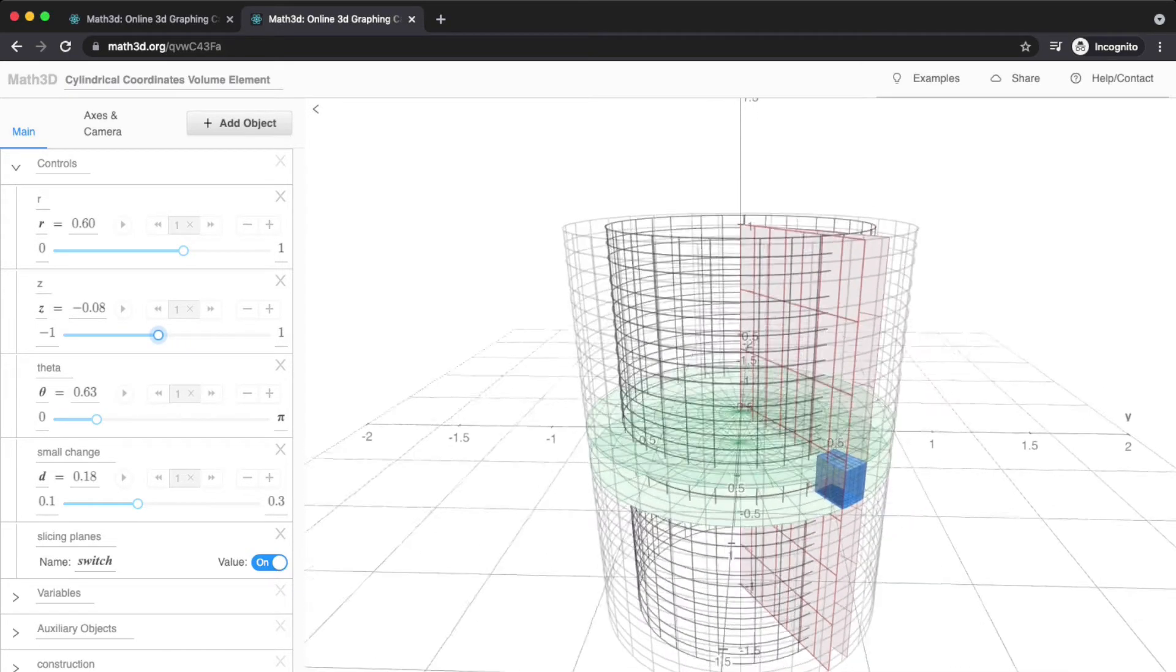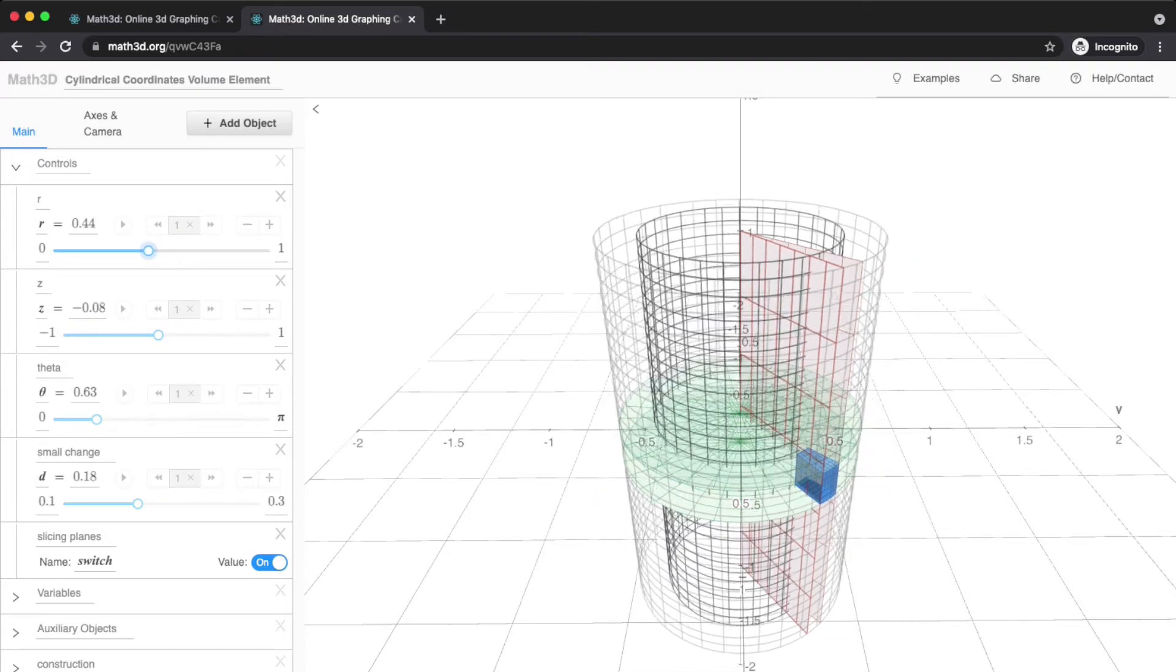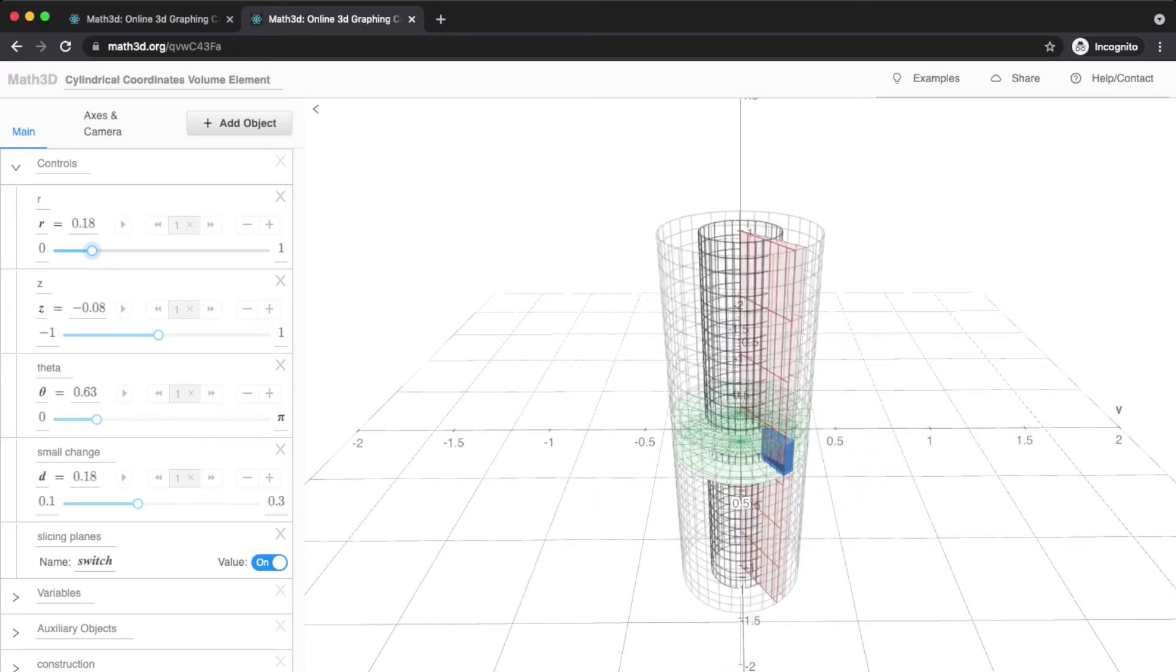From that view, we see that the volume of the box depends on DZ, DR, D theta, and also it depends on R, where it's positioned relative to the Z axis. As R changes, the box changes shape and changes volume.